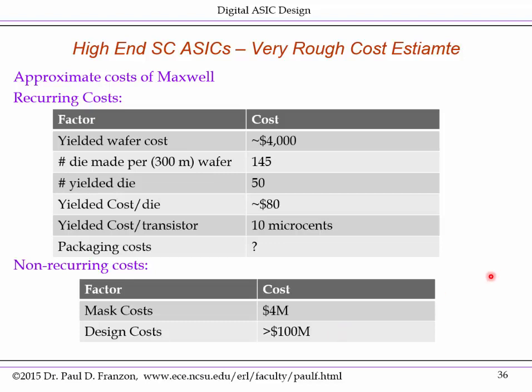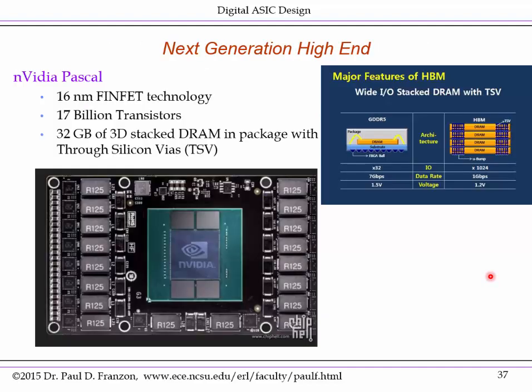Of course, we've got Moore's Law operating, with a continuing advancement in technology node. This is one reason why the numbers in the preceding section are only intended to be orders of magnitude — Moore's Law keeps marching on, adding new capability with each technology node. Not too long ago, NVIDIA announced the next GPU, the Pascal, using a 16nm FinFET technology, which has roughly 17 billion transistors — four to five times more than the Maxwell.